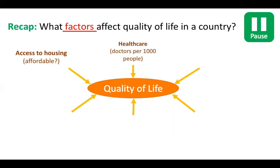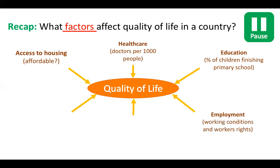Healthcare — access to a doctor when you're sick is really important, because an illness can become long-term or more serious without medical help. Education is also a massive factor: if you have options created by education and can change your job or circumstances, this defines quality of life. Education also gives people a feeling of inclusion — the ability to participate in life through access to information.